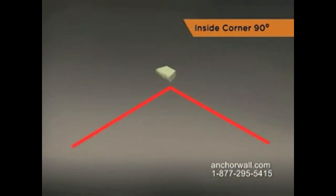To build the base course for an inside 90 degree corner, begin by placing a block at the corner starting 9 to 10 inches beyond the corner to help prevent settling. Continue installing the base course in this direction.